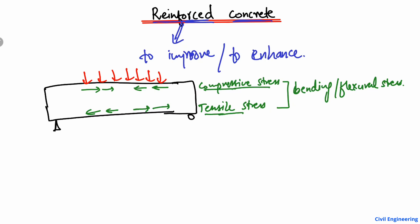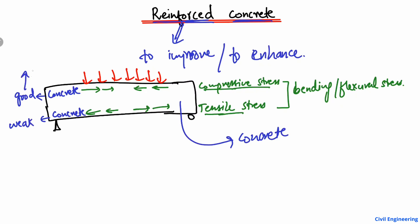We know that concrete is good in compression, but it is weak in tension. If this whole beam is made only of concrete with no reinforcement or steel bars, then the bottom part is also concrete and it is weak in tension. So upon loading, there will be cracks directly in the beam because concrete is weak in tension.